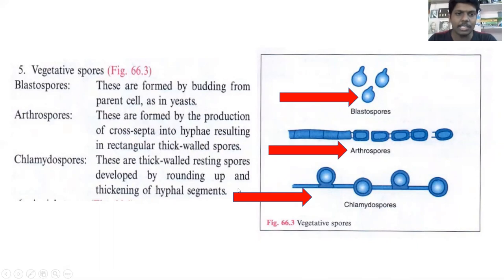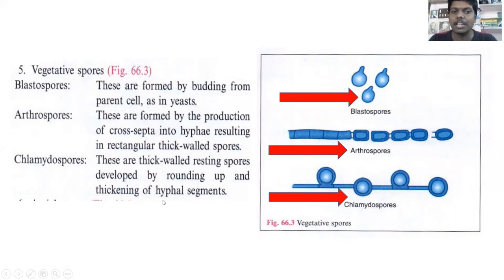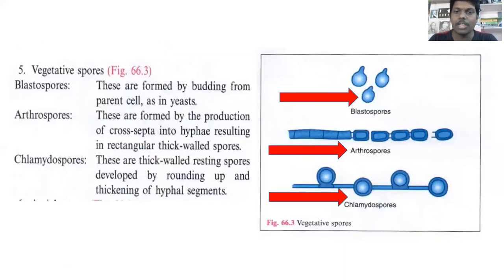Chlamydospores are originated from the thickening of the hyphae and they form a small spherical-like structure. These are thick-walled resting spores developed by rounding up and thickening of hyphae segments. These are the examples of vegetative spores.